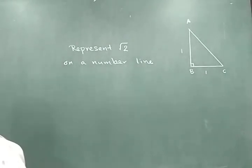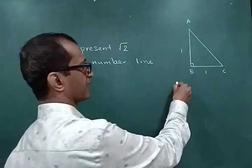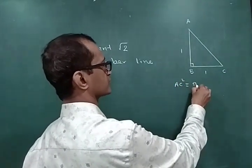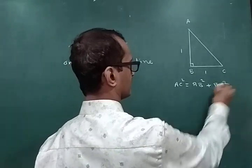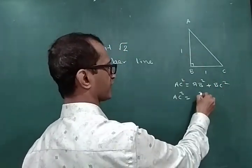then what would be the value of the hypotenuse AC? Now in triangle ABC by Pythagoras theorem, hypotenuse square is equal to side square plus side square. So we know the value of AB is 1, the square of 1,